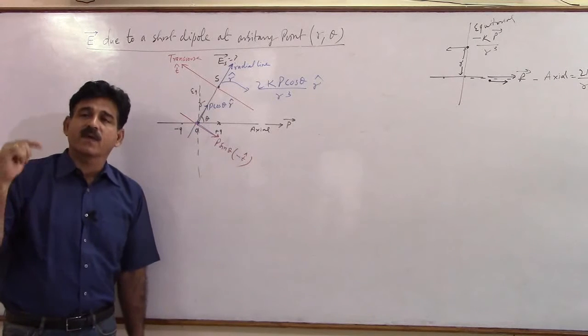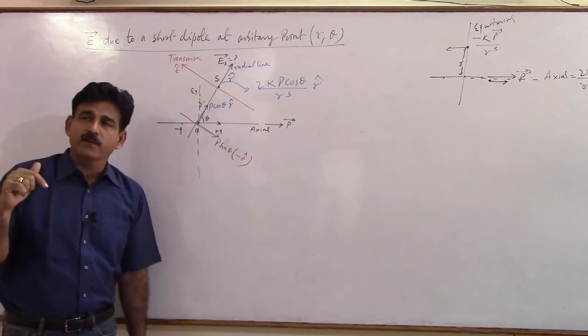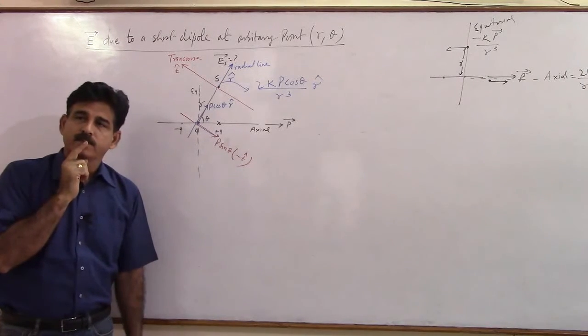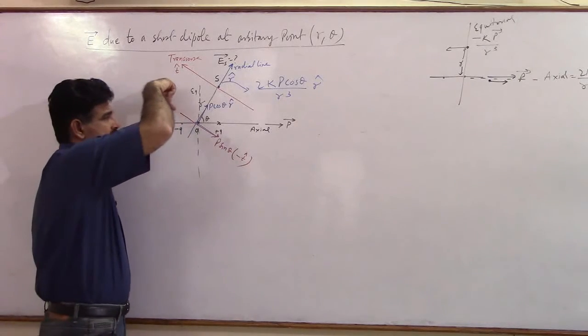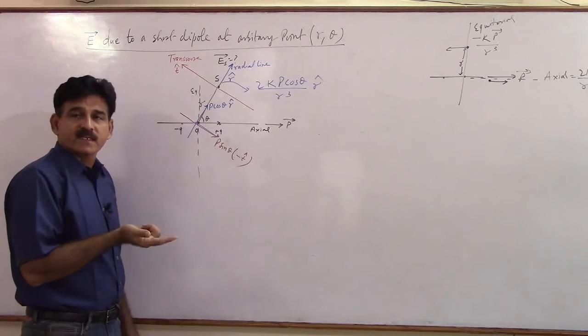Minus K P sin theta upon R cube. But the minus tells you what? Opposite to the direction of the dipole moment. Its dipole moment is directed in this direction, so the field will be directed opposite to this.